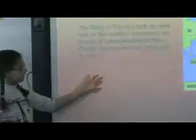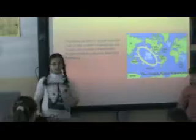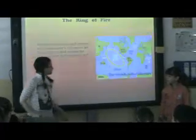We are going to explain to you what is the ring of fire. This is the ring of fire in the Pacific Ocean. It contains half of the world's volcanoes. It's located around the Pacific Ocean between Asia and Australia. This is Asia, Australia, and the Pacific Ocean.